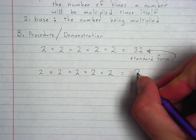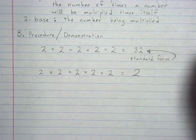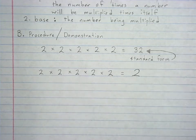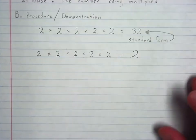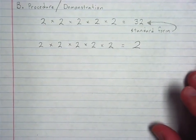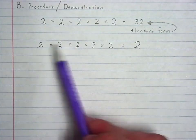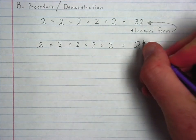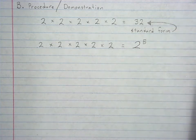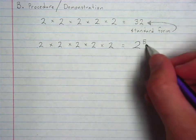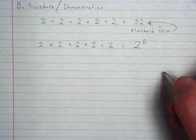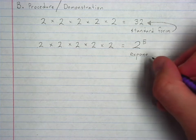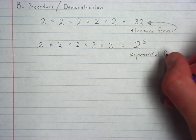Here's the same problem — 2 × 2 × 2 × 2 × 2 — but instead of solving it I'm going to write the number that's repeating. That will be the base: 2. Then I count how many times it's being multiplied times itself: one, two, three, four, five. I put a little flying five — and that little flying five is my exponent. This is exponential form.